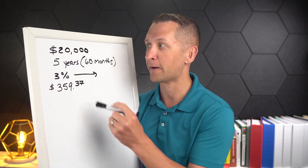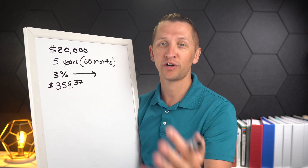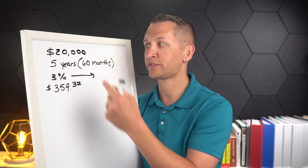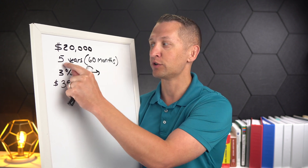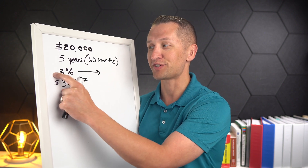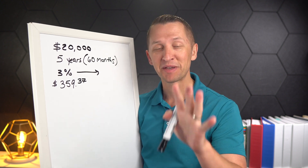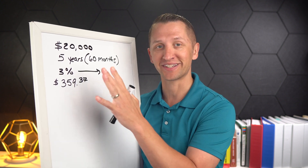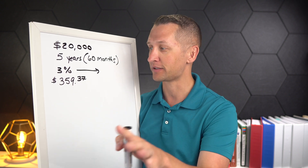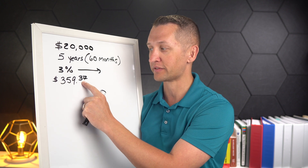Here are the numbers from that video. It was a loan of $20,000 — a $30,000 car with a $10,000 down payment. We're financing $20,000, and it was a five-year loan, so that's 60 months at 3%. I know you're thinking 3% would be great today, but that is what we use. You can use whatever number when you do your own calculations. And that total car loan payment is $359.37.